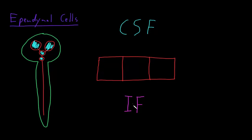And I'll just write IF as short for interstitial fluid. On the side of the ependymal cells facing the cerebrospinal fluid are a large number of little tiny processes called microvilli that increase the surface area of the ependymal cells on that side.